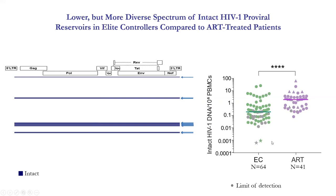We were also able to distinguish two elite controllers with extremely low or undetectable levels of intact proviruses. In fact, 14 out of 64 elite controllers have no detectable intact proviruses so far, though for some we don't have enough cells to look deeper. For one patient we have a large number of longitudinal samples available, allowing us to look much deeper.